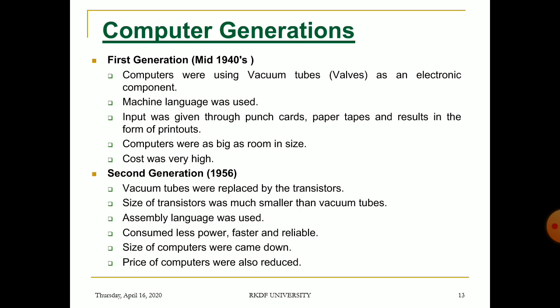Now, computer generation. There are five different generations in the computer system. The first generation was between 1942 and 1955, in the mid-1940s. In this generation, vacuum tubes were used as the electronic component.